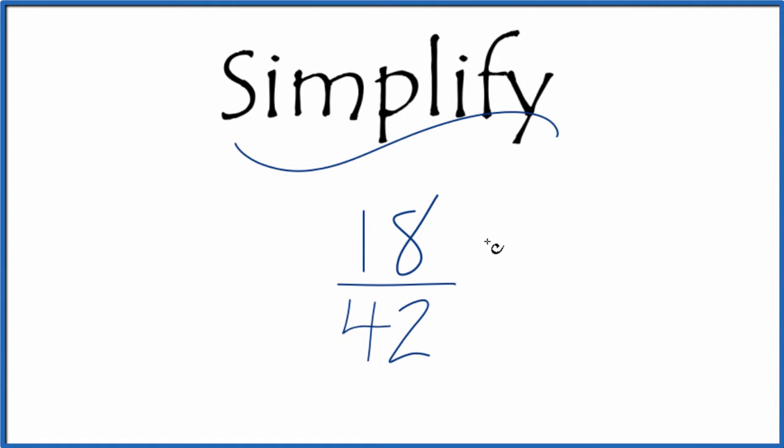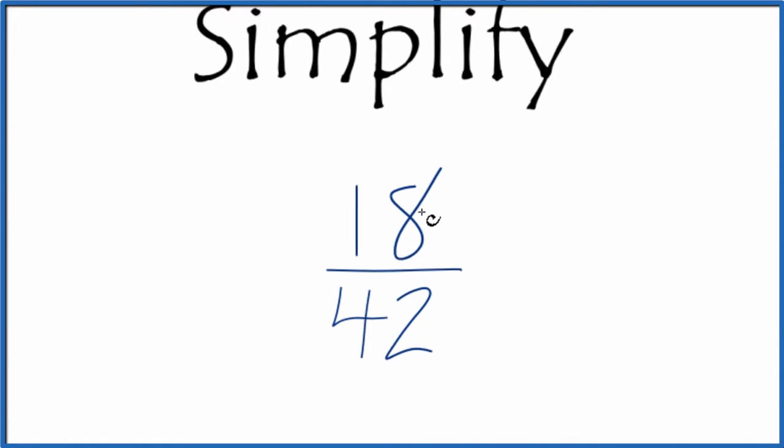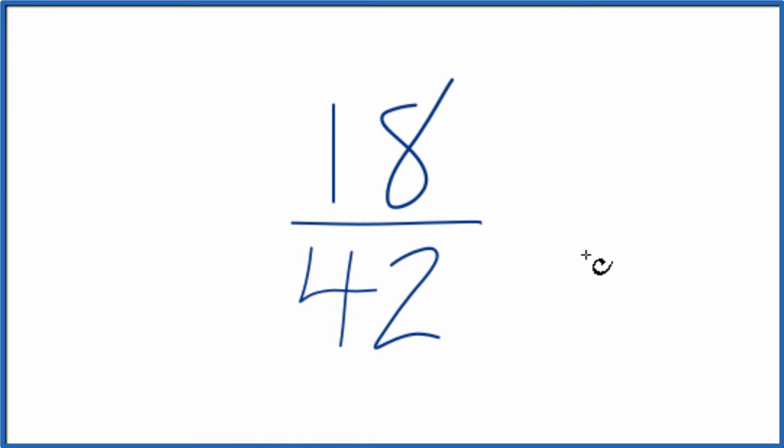Let's just quickly simplify the fraction 18/42. What we're trying to do is find another fraction that's equivalent to 18 over 42, that has the same value, just we want it in lowest terms.